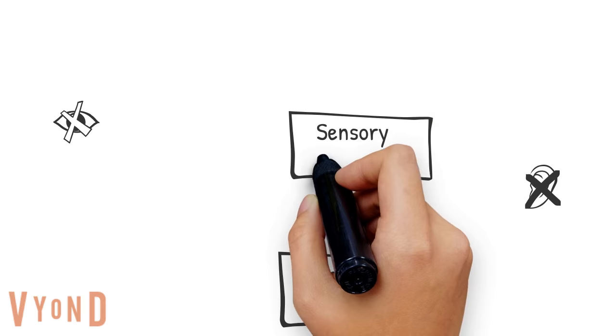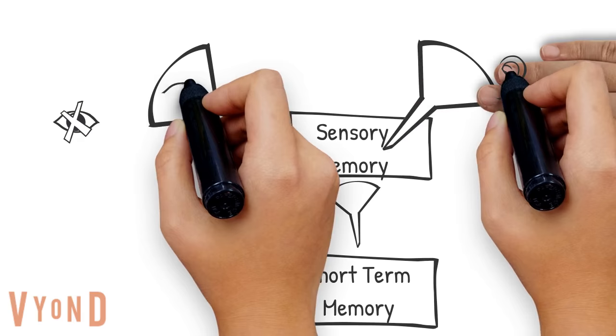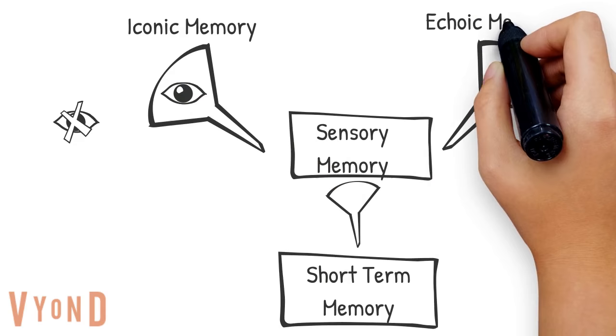Sensory memory for visual information or vision is called iconic memory, while sensory memory for auditory information is called echoic memory.